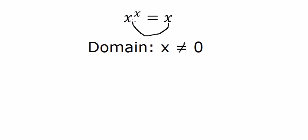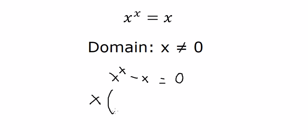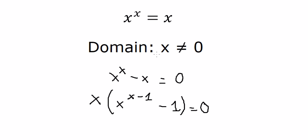Next, we move s to the left and do factorization. From the factorization, we get s equals zero, but the domain cannot accept this value, so we discard it.